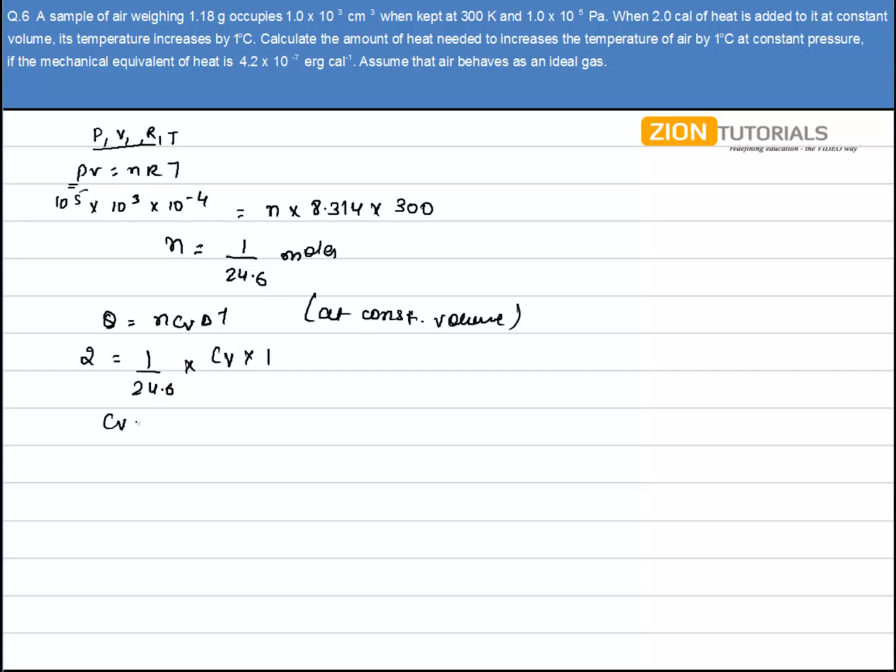So Cv comes out to be 49.2, and the unit of Cv is calorie per mole per degree Celsius.